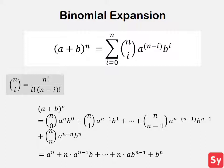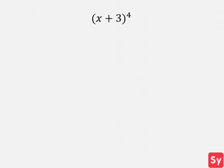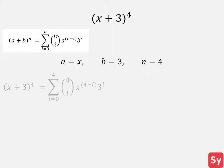Let's see some examples of binomial expressions. First example, we have x plus 3 to the 4th. Let's take a look at the binomial expansion formula. In this example, a is equal to x, b is equal to 3, and n is equal to 4. Now let's plug these values back into the formula.